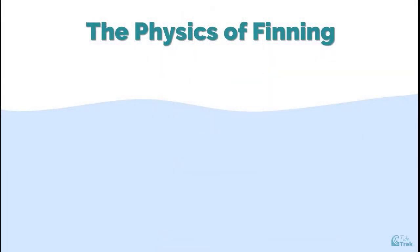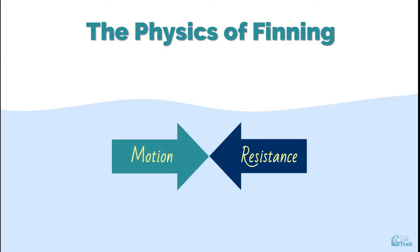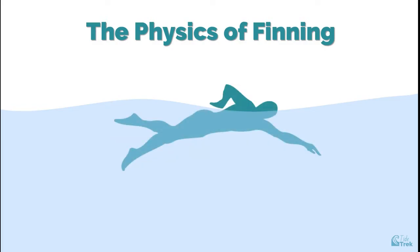The basic function of the swim fin is to generate forward propulsion or thrust by exploiting the resistance of water against anything moving through it. That means anything moving through water has the potential to generate propulsion. For example, moving your legs up and down pushes the water off and around your feet, creating thrust.